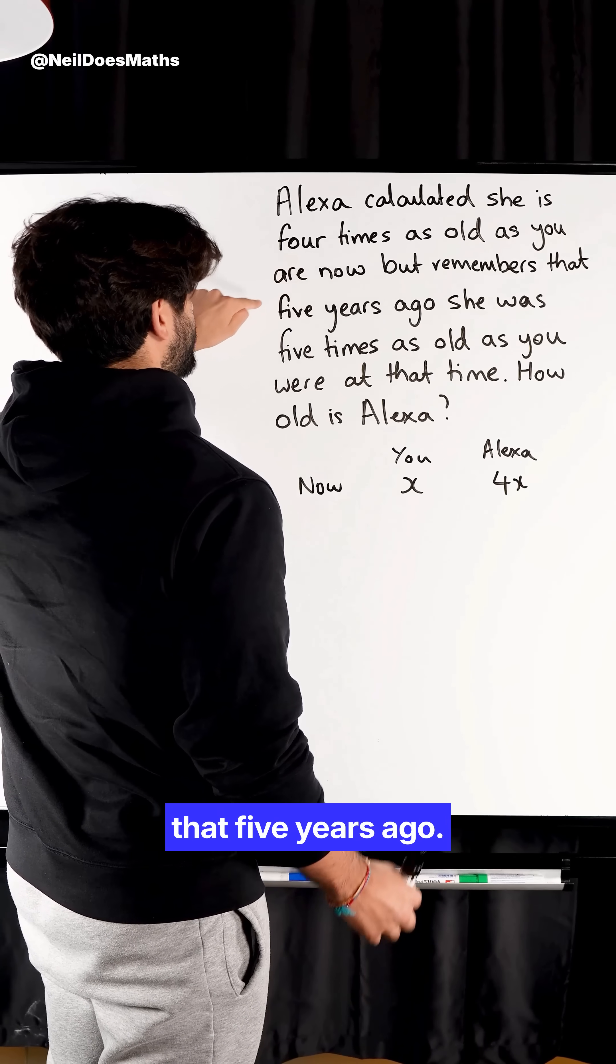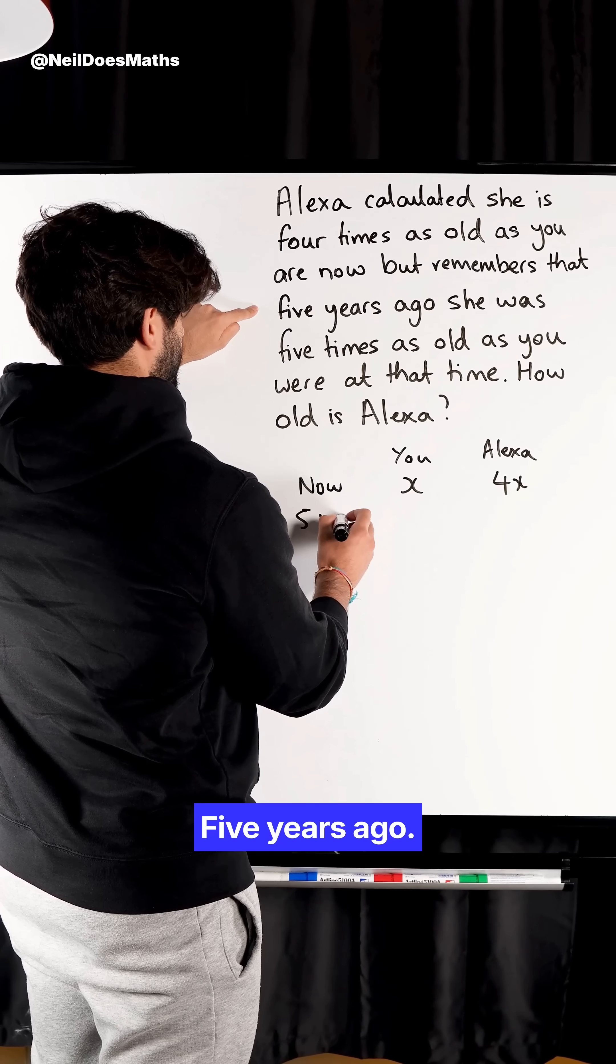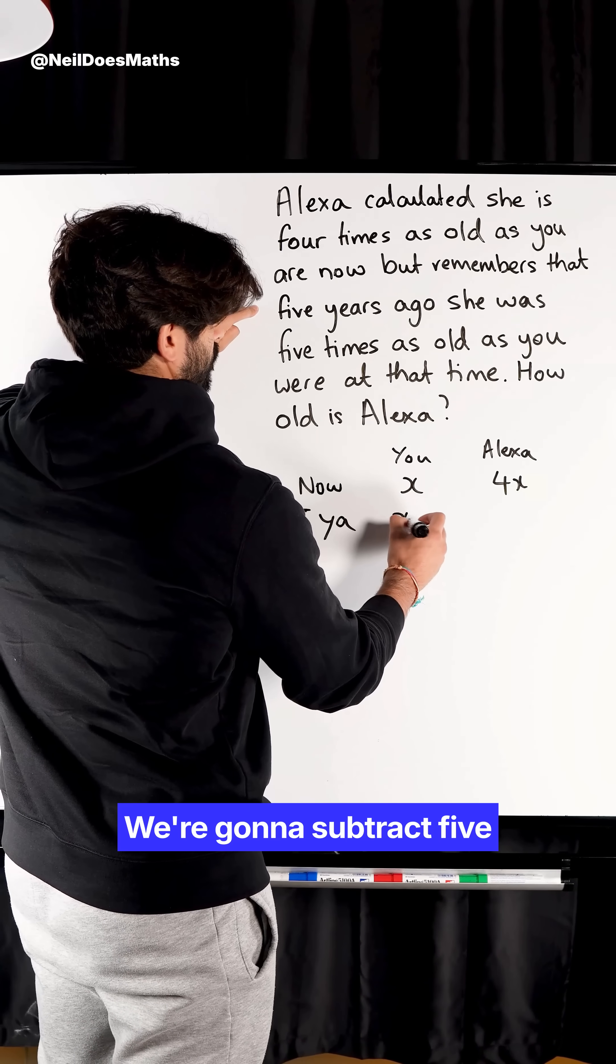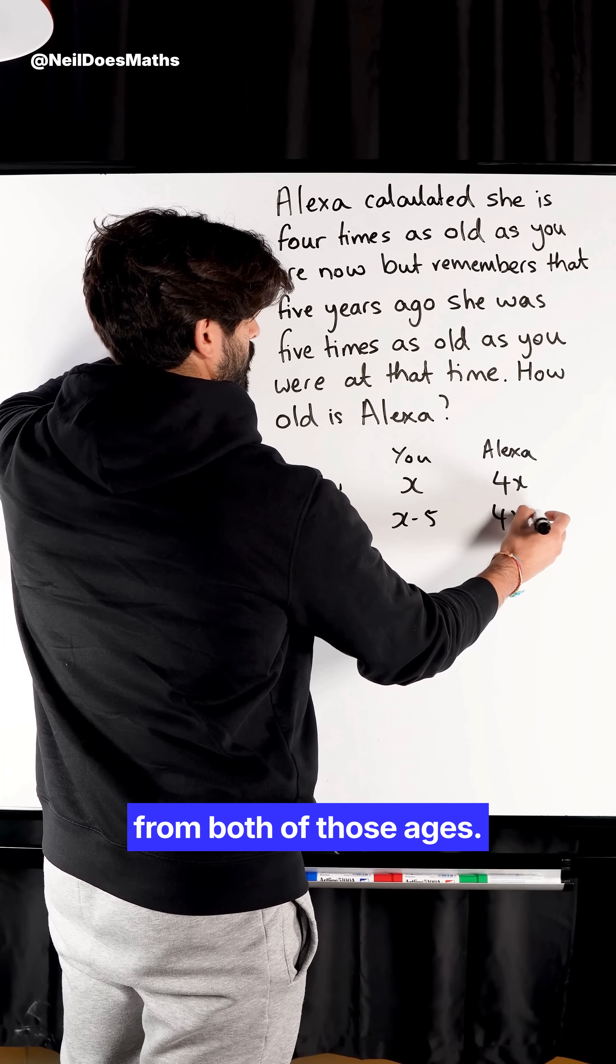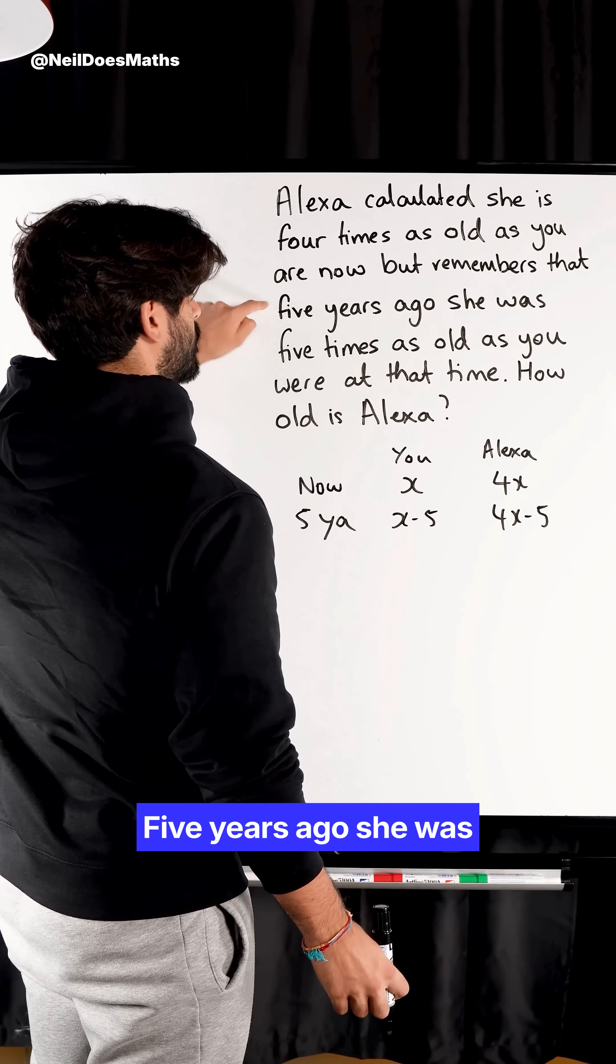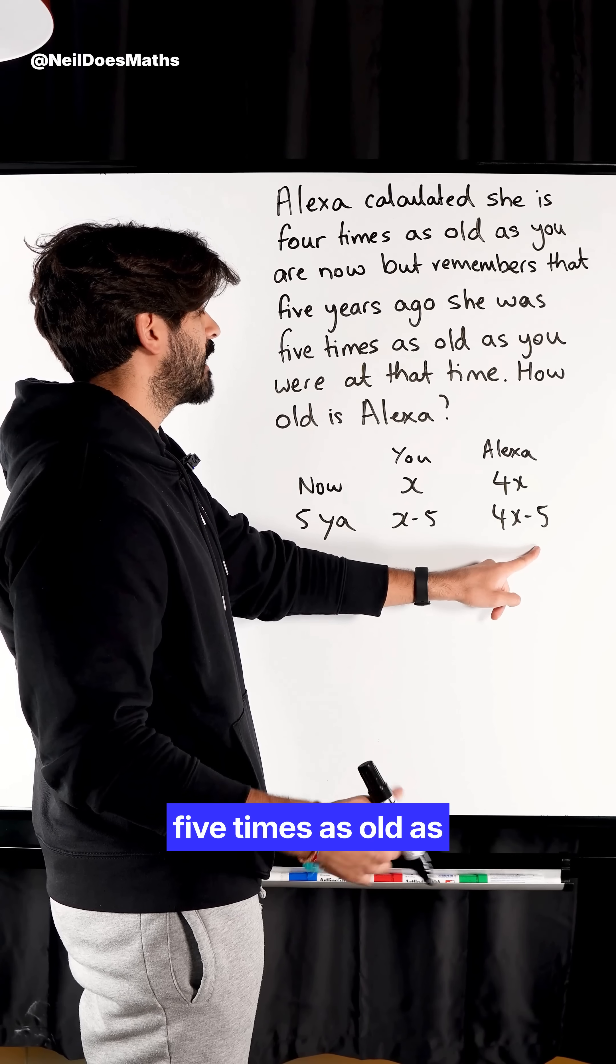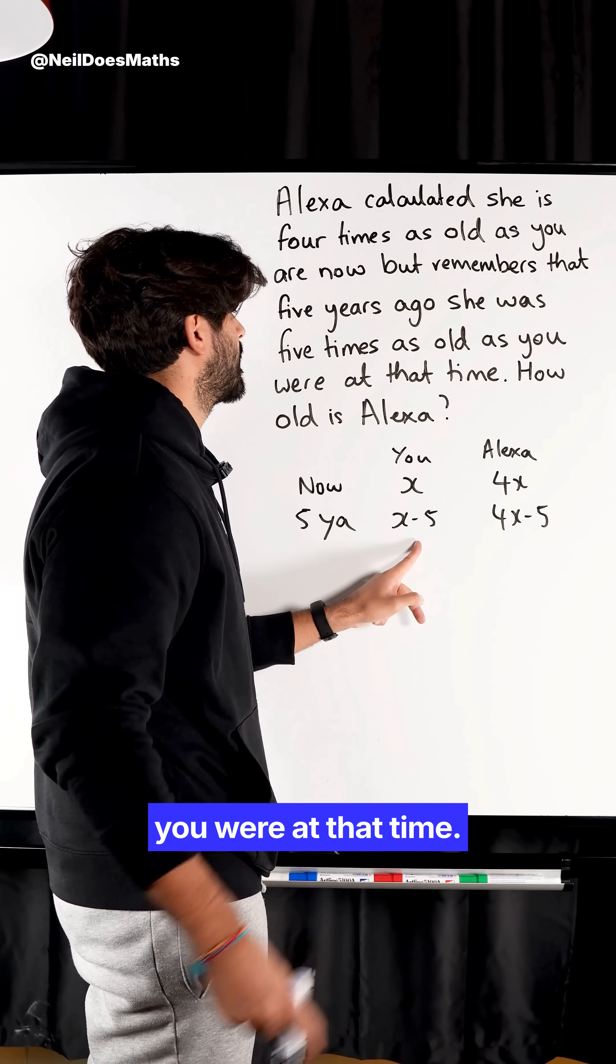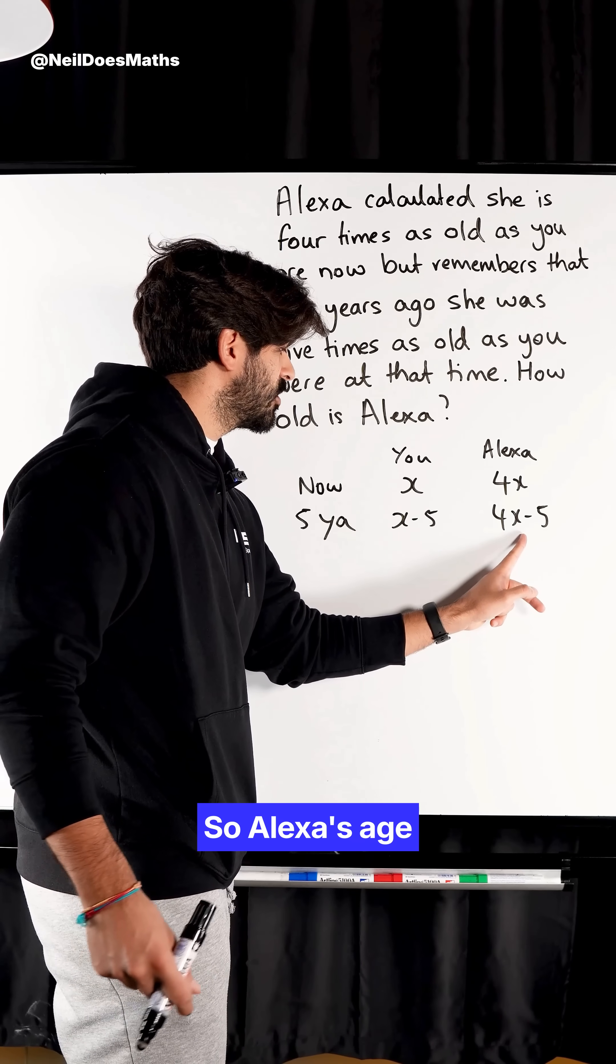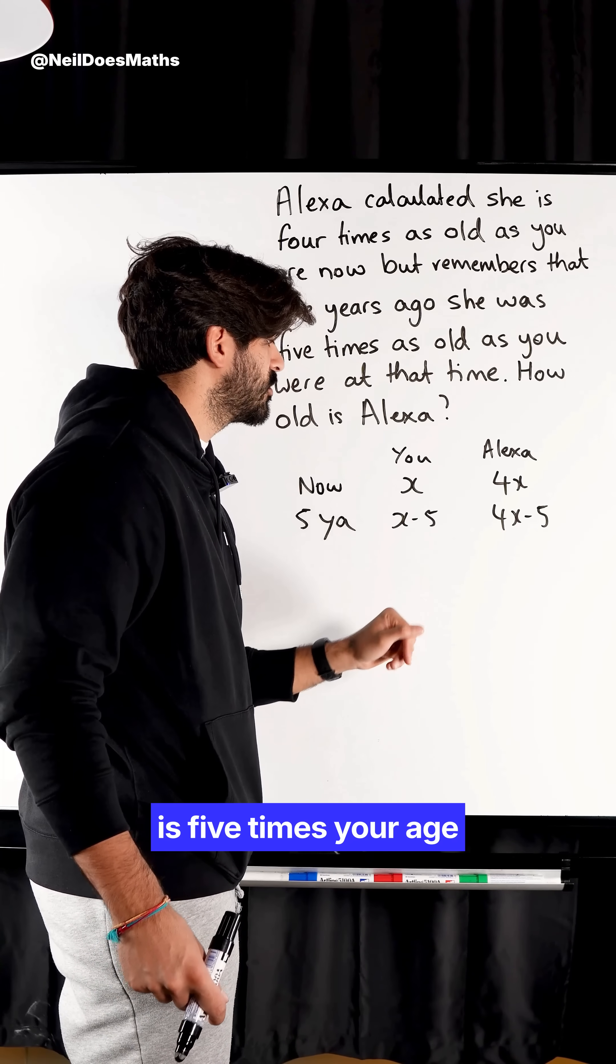However, she remembered that five years ago, five years ago, we're gonna subtract five from both of those ages. Five years ago, she was five times as old as you were at that time. So Alexa's age is five times your age five years ago.